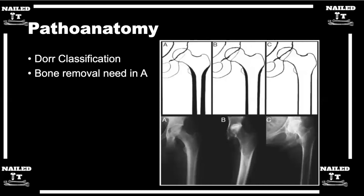The Dorr classification has implications — it may tell you how likely someone is to fracture, and what you need to prepare for if planning a surgical repair. The x-ray on the Dorr A side: if you were to put an IM nail in there, you'd have to be prepared to ream quite a bit more, but you'd get really great diaphyseal engagement of the nail. Whereas on the Dorr C femur, you wouldn't have to do as much reaming, but you may lose that diaphyseal fit of the IM nail — so you may be relying more on your cephalomedullary screws or interlocking screws for stability.